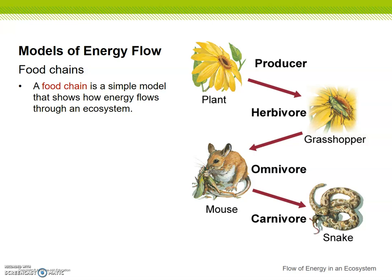A food chain is a simple model that shows how energy flows through an ecosystem. In this picture, we start with the plant, which is a producer — it's autotrophic, it makes its own food. It gets consumed by the grasshopper, the grasshopper gets consumed by the mouse, and the mouse gets consumed by the snake. Each level benefits from the level below it, all the way back down to the plant, which initially got its energy from the sun. That's how we can say we still get energy from the sun even if we're not eating plants directly.